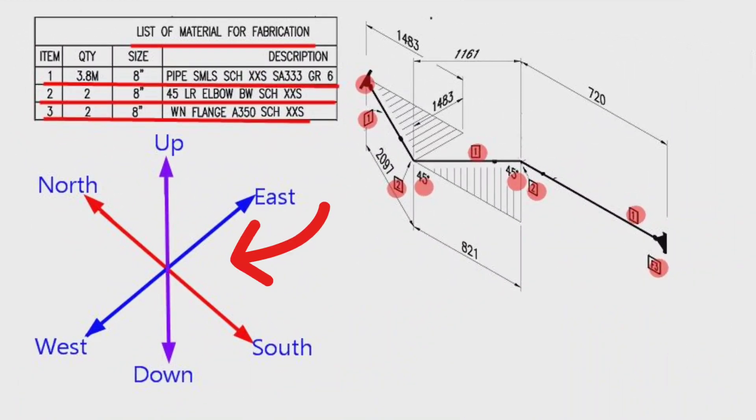Every pipe drawing has such a sketch; this indicates the directions. By studying these directions, we can easily read any pipe isometrics. There are 6 directions here.